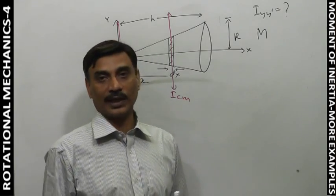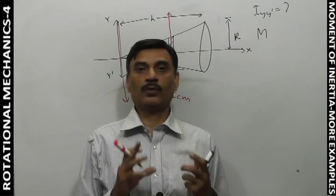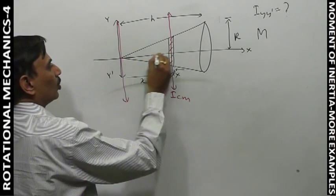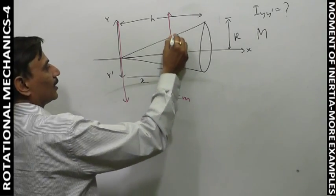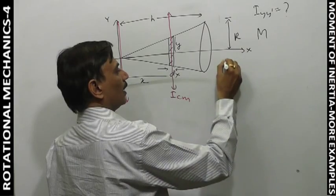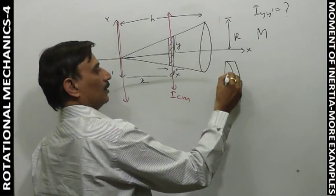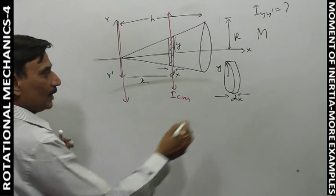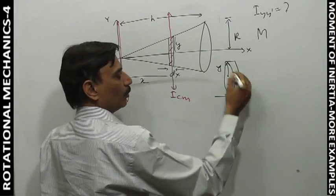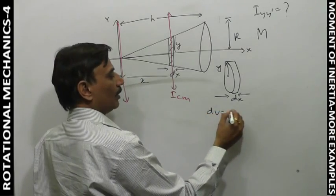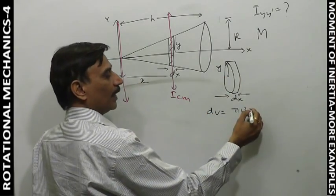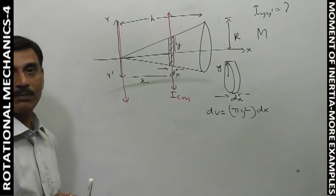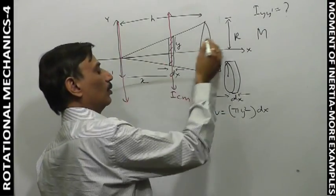We can also calculate using basic integration. That is, we can use the volume of the disc. The disc at x distance has dx thickness. The radius of this section is y. The volume of this disc element is π·y²·dx.